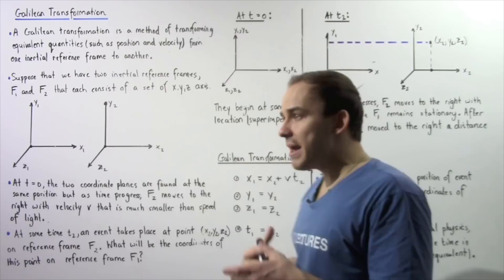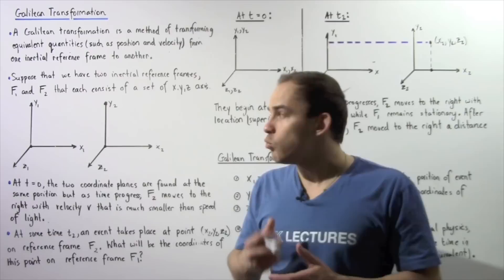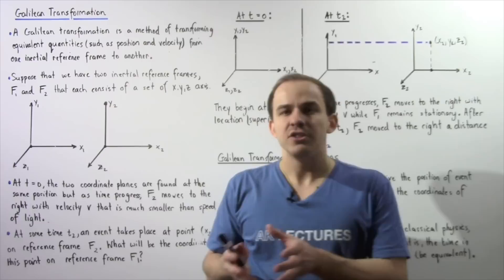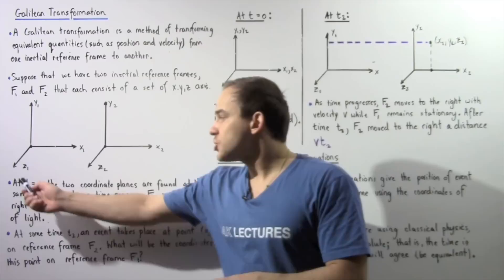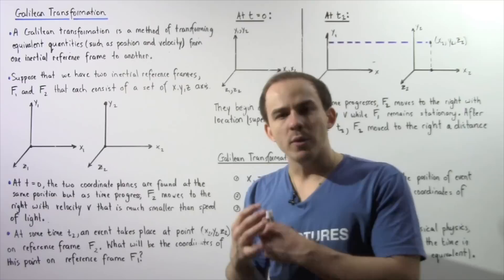To gain a bit more intuition about what is actually taking place, consider the following analogy. Suppose we have a car resting on a road. The road is reference frame F1 and the space inside the car is reference frame F2. Initially, the car is at rest on the road, so at time zero seconds the two coordinate planes are found at the same exact position — they coincide.